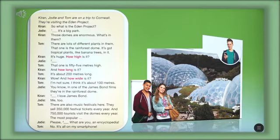Here, Jody and Tom are on a trip to Cornwall. They're visiting the Eden Project. So what is the Eden Project? Basically, it's a big park. Those domes are enormous. What's in them? There are lots of different plants in them.